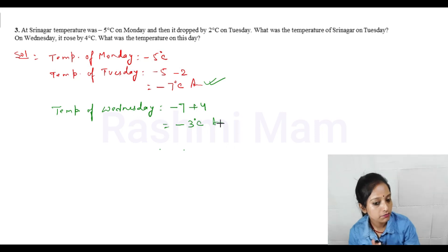What was the temperature on this day? It will be minus 3 degrees C on Wednesday. That will be the answer. Let's see the next question.